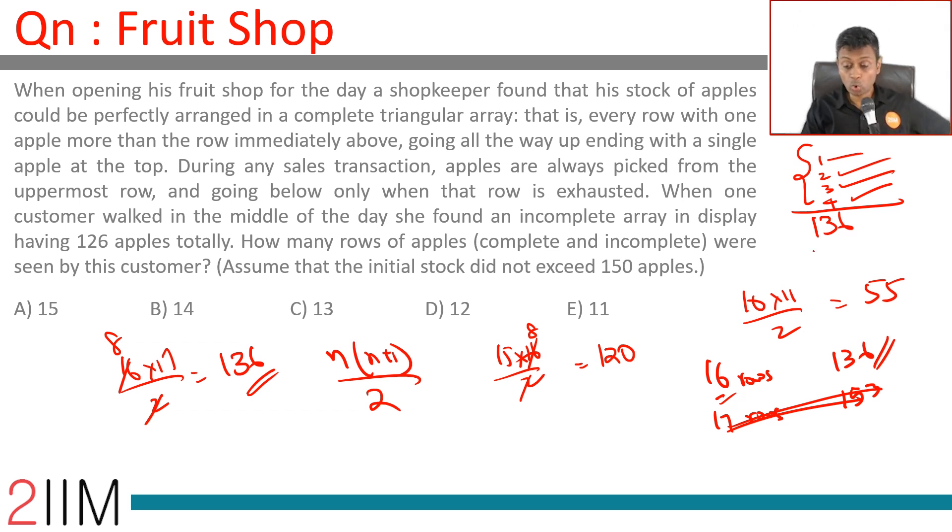Brilliant! How many rows of apples, complete or incomplete? A total of 16 rows would have been there to start with. 16 into 17 by 2 is 136. The first four rows disappear. There would have been 12 rows, or effectively...